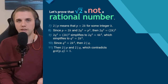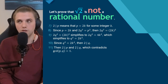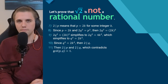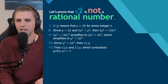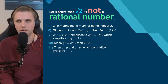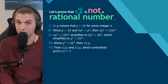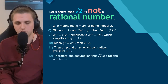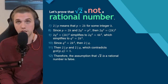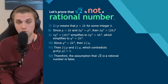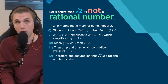That 2 divides both p and q contradicts the fact that the greatest common divisor of p and q is 1 — so why does 2 divide both of them? That's a contradiction. And this is where we finally prove that the assumption that √2 is rational is false, meaning √2 is not a rational number.